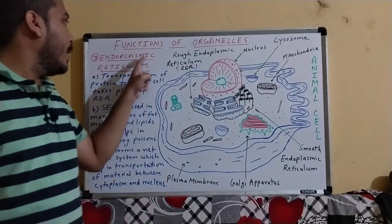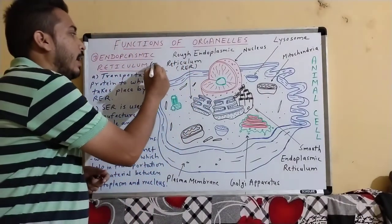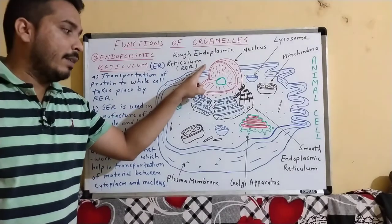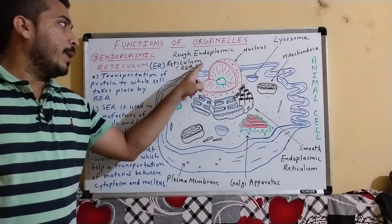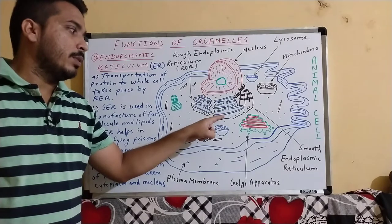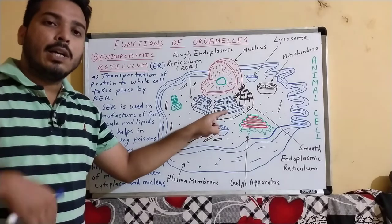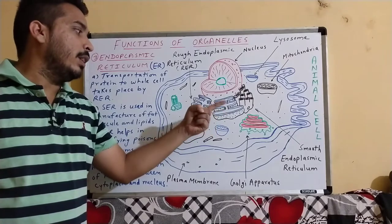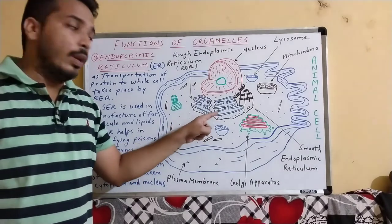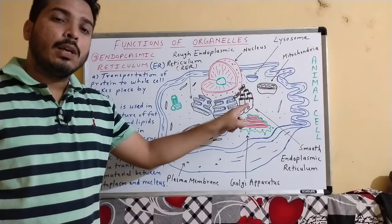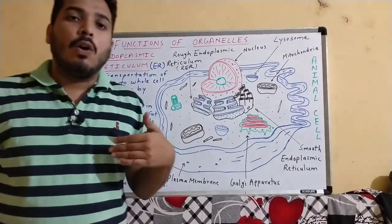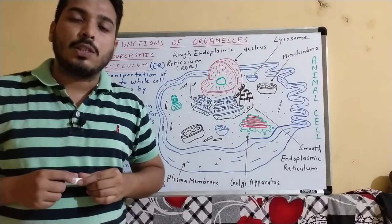Our next cell organelle is endoplasmic reticulum, or ER. Endoplasmic reticulum is classified into two types: rough endoplasmic reticulum and smooth endoplasmic reticulum. Rough ER is called 'rough' because on its surface there are small dots called ribosomes, which make the surface look rough. Smooth ER does not have ribosomes on its surface. Ribosomes help in the manufacture of protein.